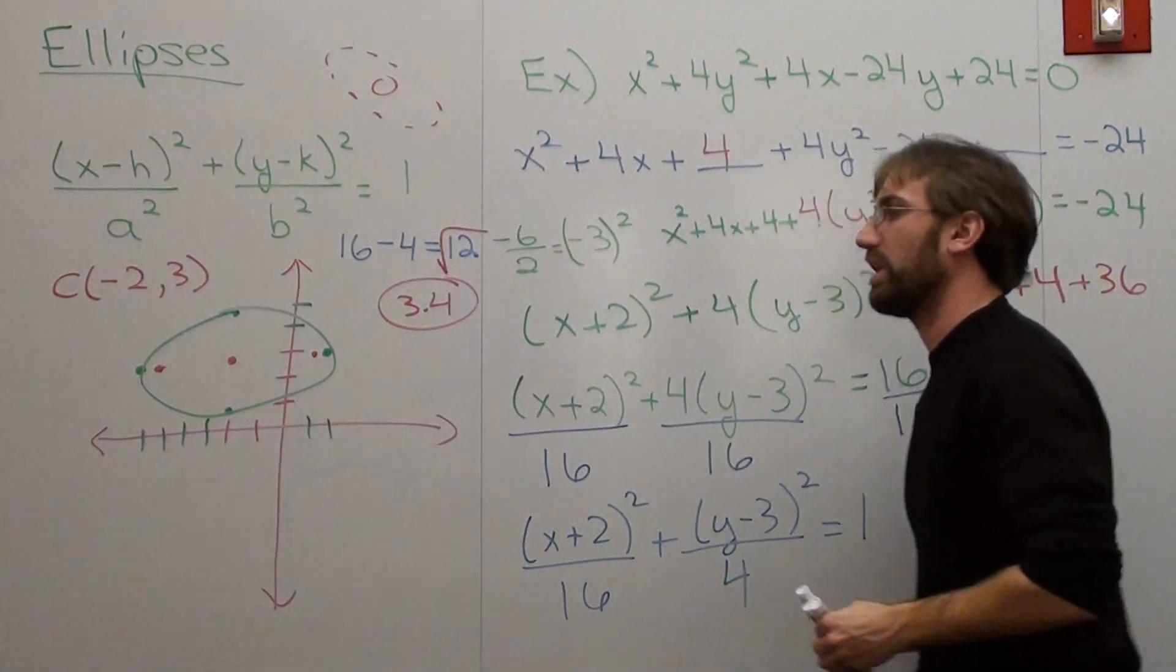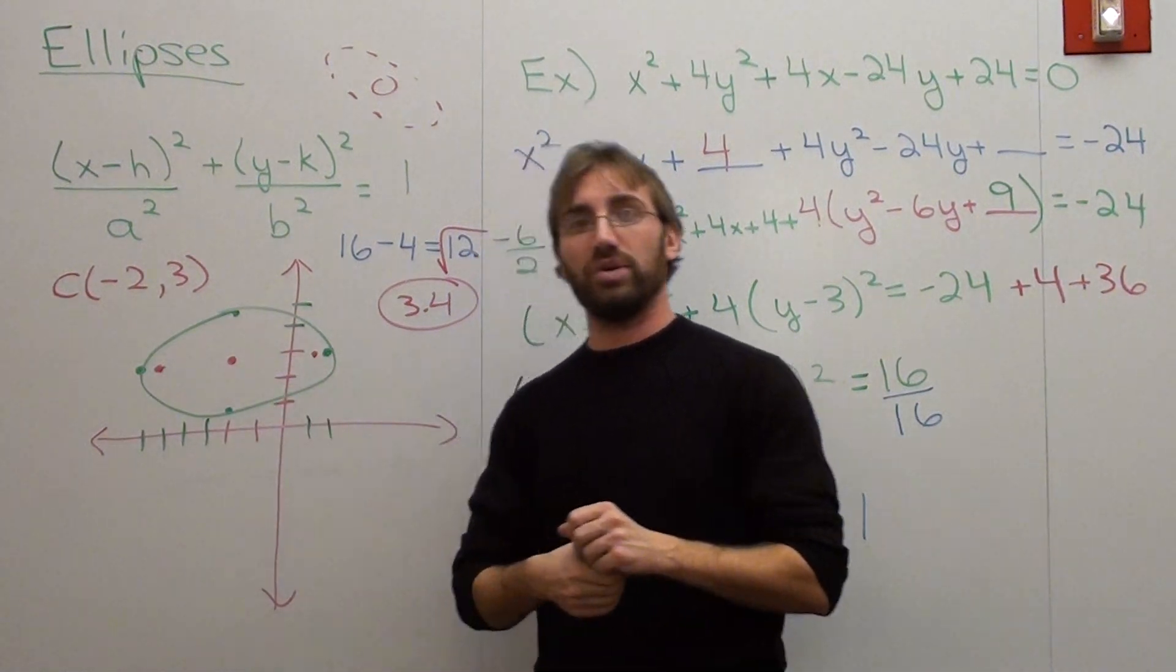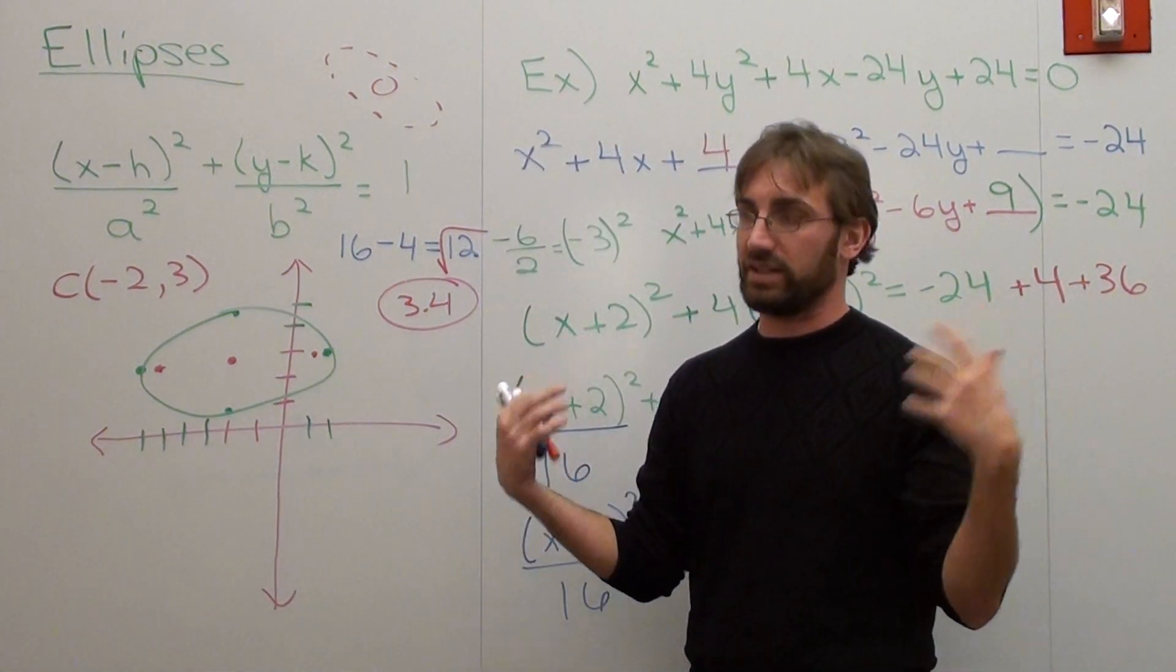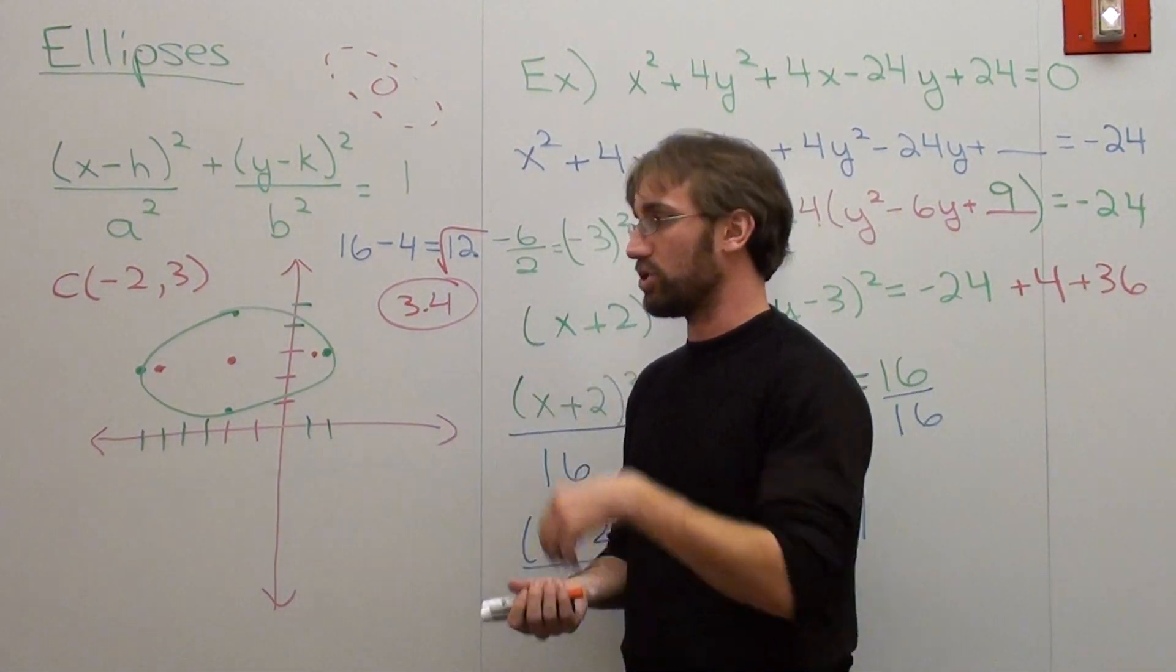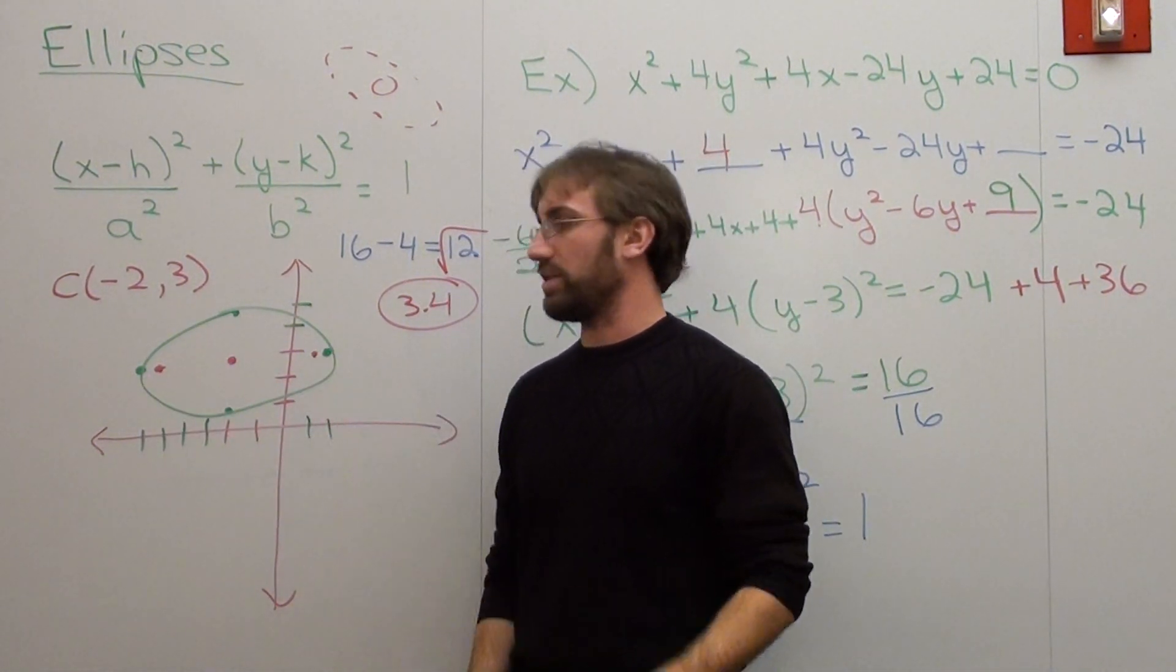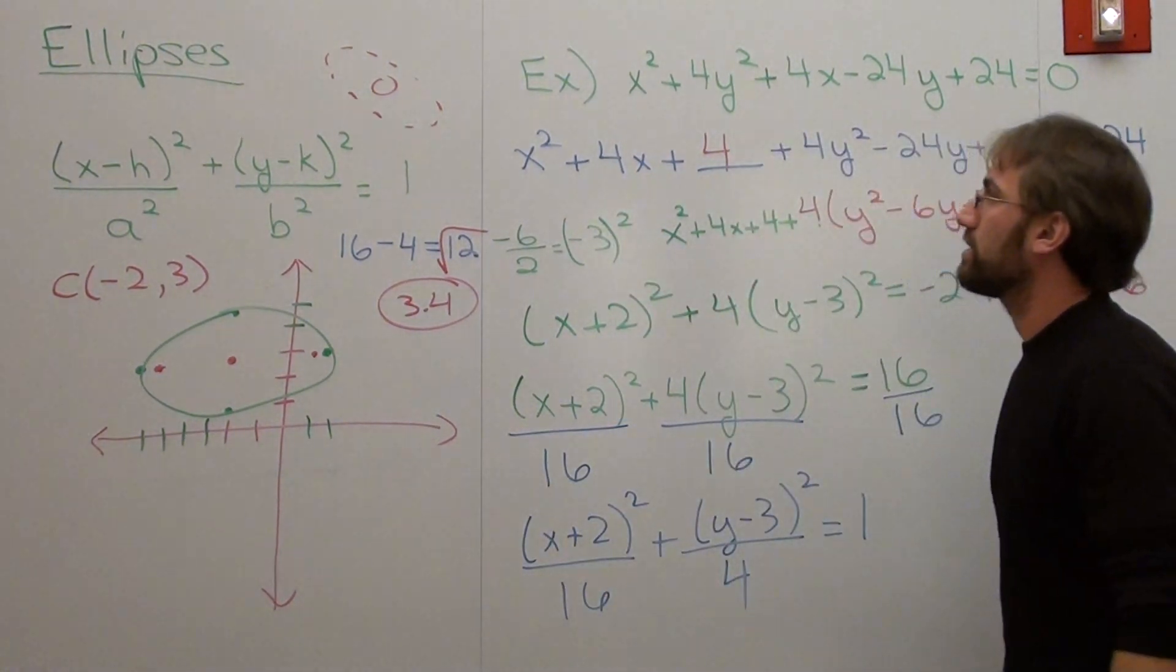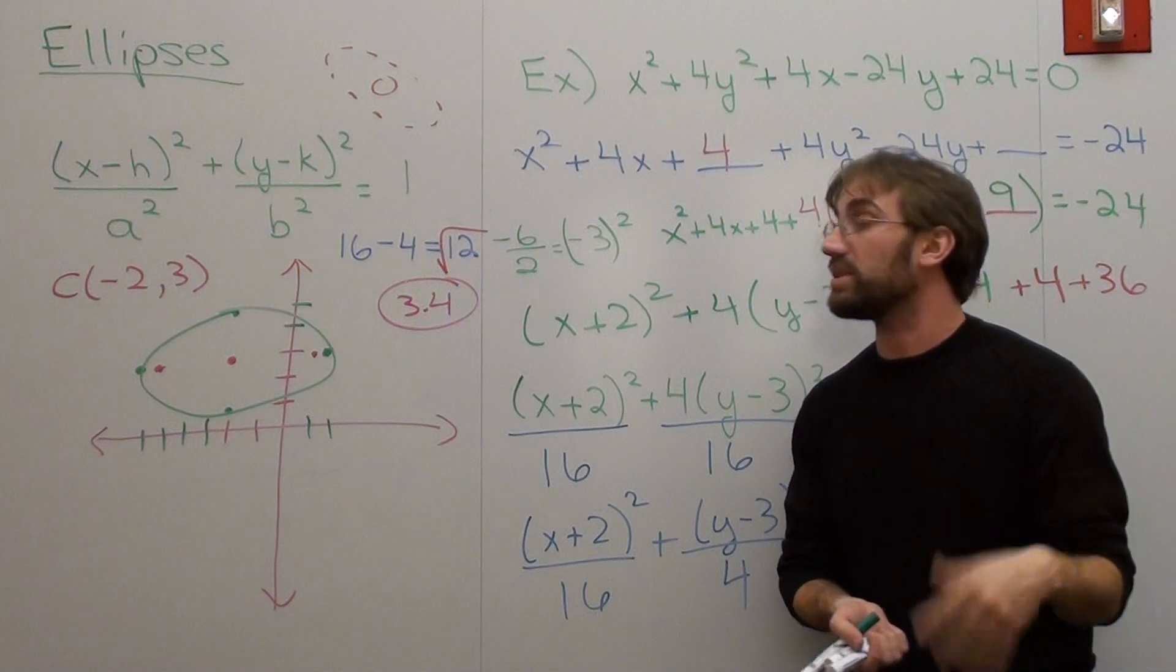So you went ahead and you got yourself a graph. You got a center. You got two foci. And it's always on the longer of the two axes, the major axis. The smaller one's called the minor axis. And you got four vertices right there. And that's just basically where the graph hits those points. So that's a basic introduction to ellipses.